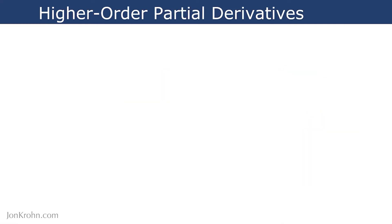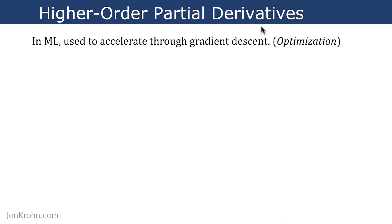So how do we take that concept of higher-order derivatives and apply it to partial derivatives? In machine learning, higher-order partial derivatives are used to accelerate gradient descent. We're going to talk about that in a lot of detail in subject 8, on optimization at the end of this Machine Learning Foundation series. So you're going to need this theory for then.